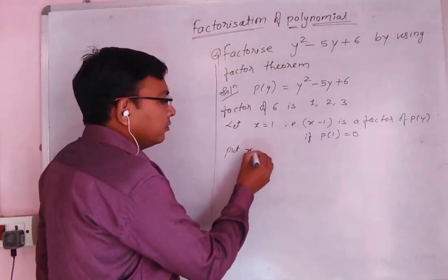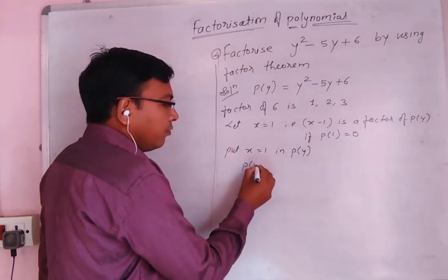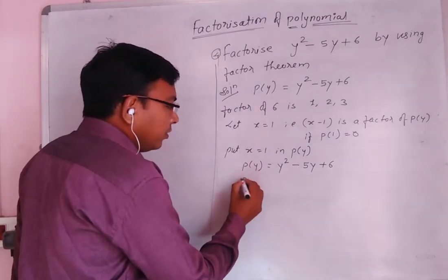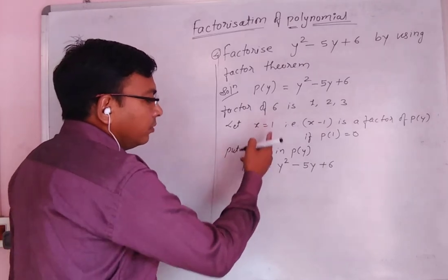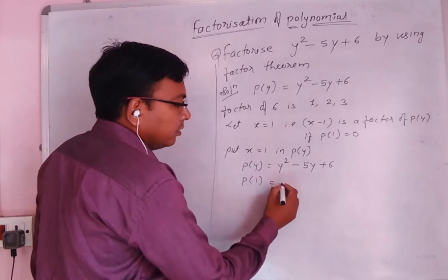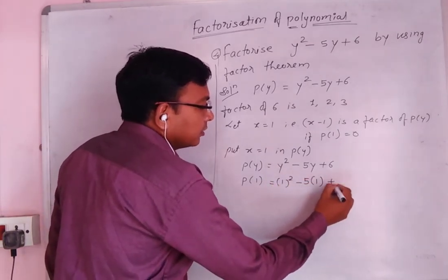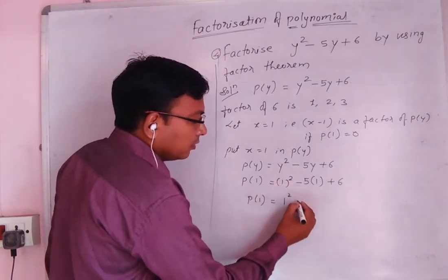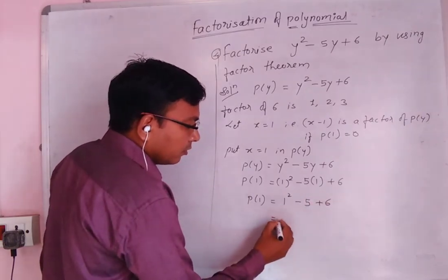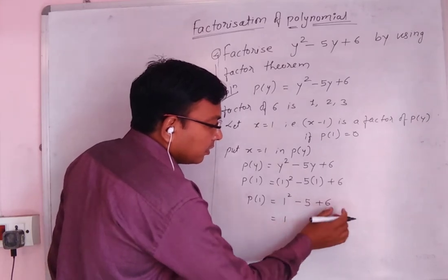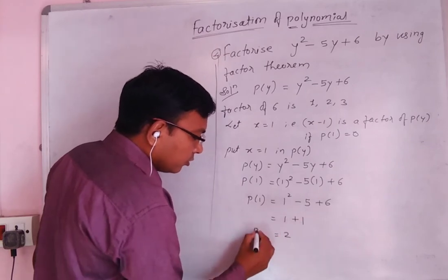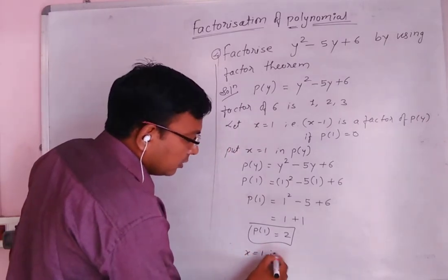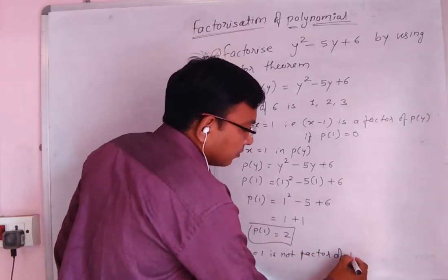Put x equal to 1 in p of y. p of y is equal to y squared minus 5y plus 6. We put 1 in place of y: p of 1 equals 1 squared minus 5 times 1 plus 6, which gives 1 minus 5 plus 6 equals 2. So p of 1 is equal to 2, which means x equal to 1 is not a factor of p of y.